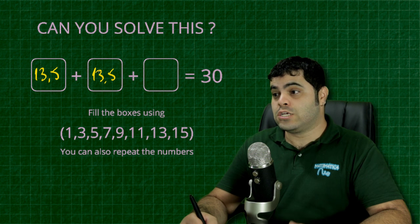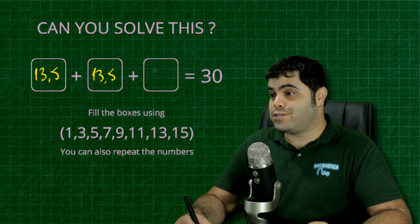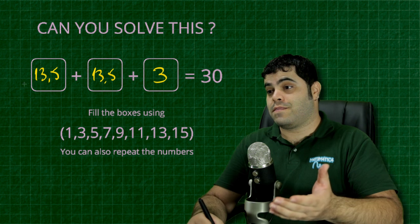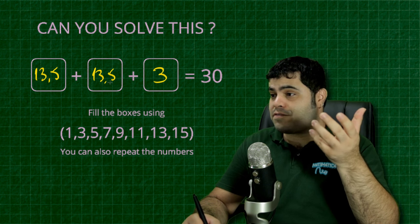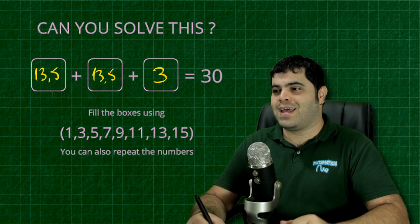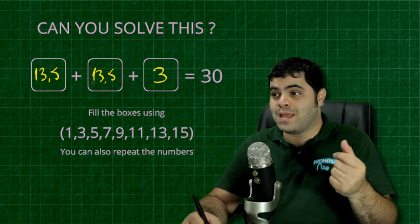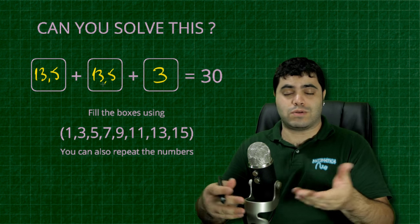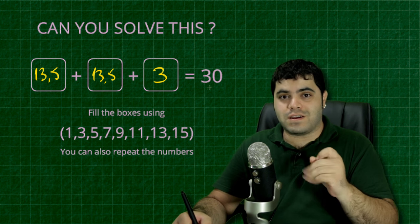So I could use three here. So 13 comma 5 plus 13 comma 5 plus 3. This is the same thing here in Brazil, at least, as 13 and a half plus 13 and a half, which is 27, plus 3 is equal to 30.